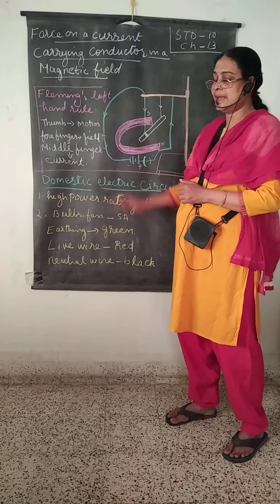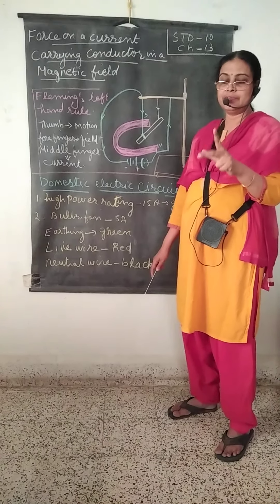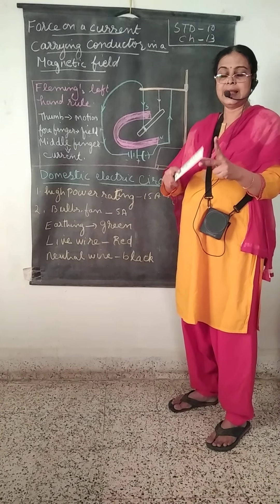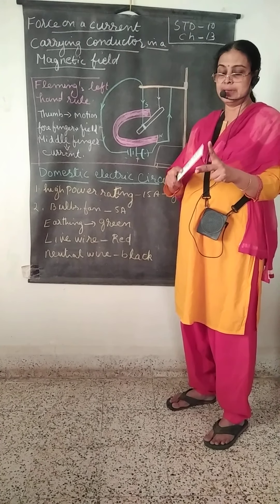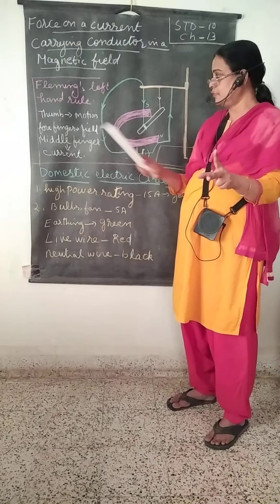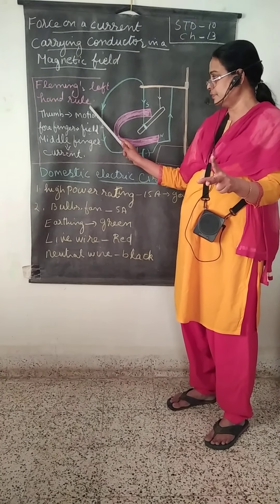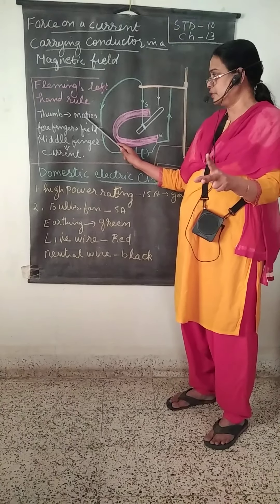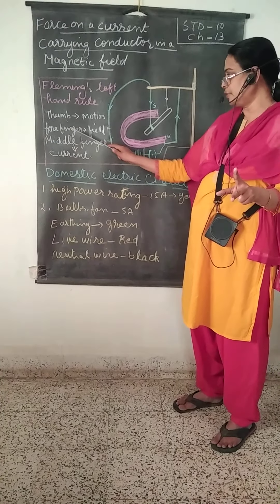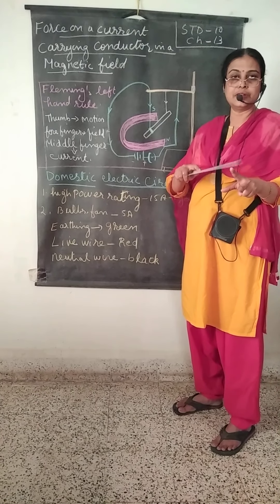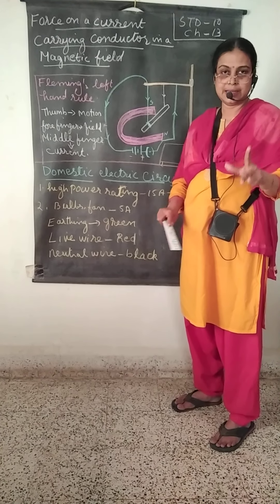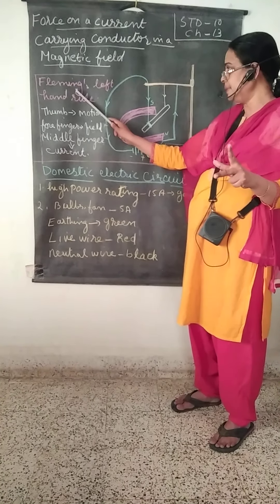Fleming's left-hand rule states that if you keep the left hand with the thumb, forefinger, and middle finger mutually perpendicular: the thumb gives the direction of the force, that is the motion of the conductor; the forefinger gives the direction of the magnetic field; and the middle finger shows the direction of the current.